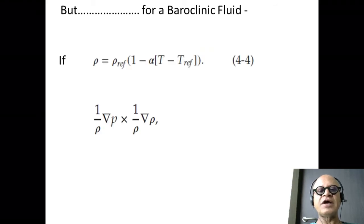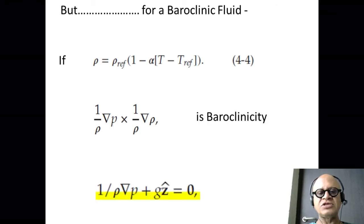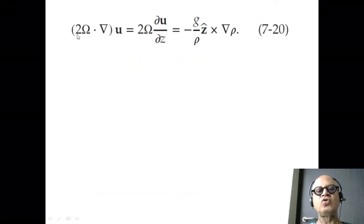So baroclinicity is that, but for a baroclinic fluid, we had gone through this and made a simpler case for water with reference density and the thermal coefficient of expansion depending on temperature. And then grad P cross grad rho in this case could be combined with our hydrostatic balance. So you can take grad rho cross of this, you will end up with baroclinic vector again and G cross grad rho.